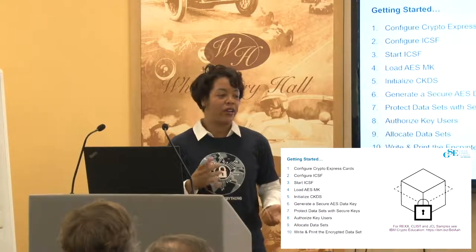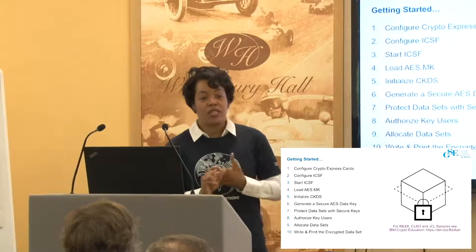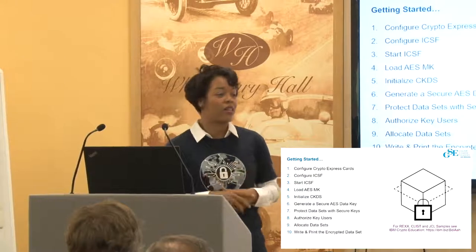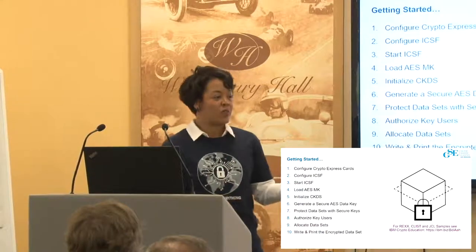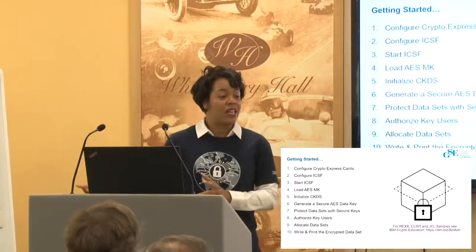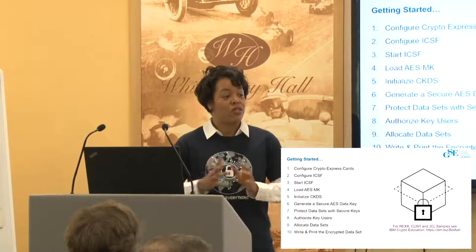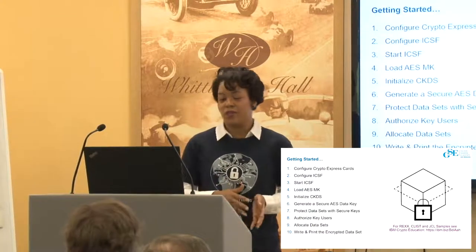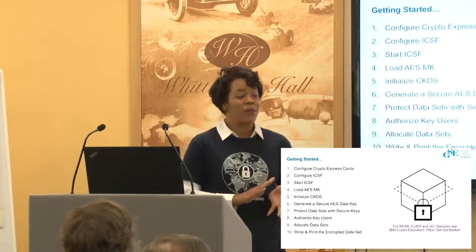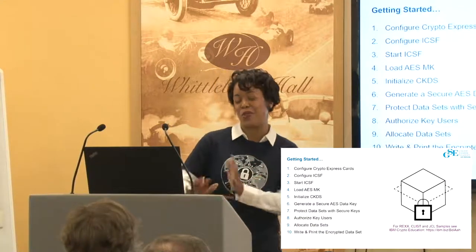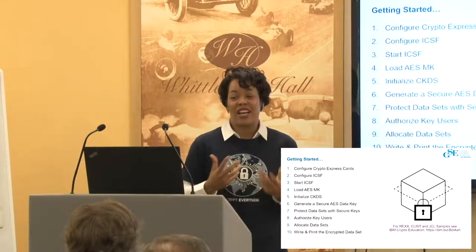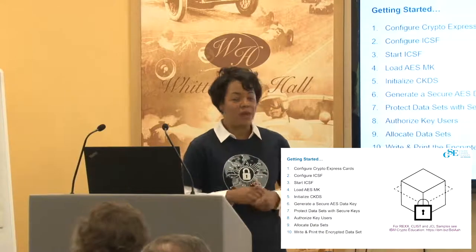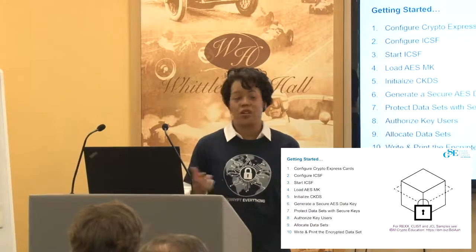Pervasive encryption covers network, coupling facility, application level, database level, data set level, and file level. It covers Linux, ZOS, ZVM, disk and tape encryption, and hardware. There are so many different aspects of pervasive encryption — we're right now just going to focus in on data set encryption. Some people assume pervasive encryption is only about data set encryption, but it's really a number of technologies and capabilities that work together across the enterprise.